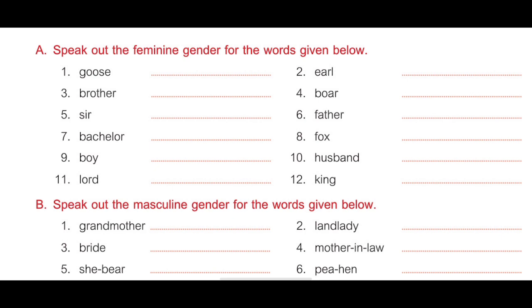Tenth, husband — answer is wife, W-I-F-E. Eleventh, lord — answer is lady, L-A-D-Y. Twelfth, king — answer is queen, Q-U-E-E-N.